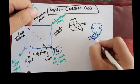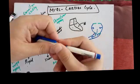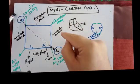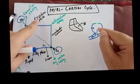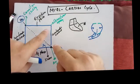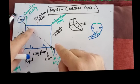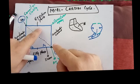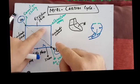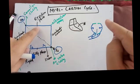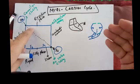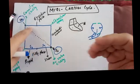When the semilunar valve opens, blood comes out during heart contraction — this is the ejection phase. The ejection phase has two sub-phases: the rapid ejection phase, where blood comes out very rapidly, and the slow ejection phase, where blood flows slowly.